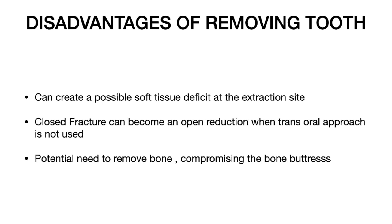The disadvantages of removing a tooth in the line of fracture include: a possible soft tissue deficit at the extraction site, a closed fracture becoming an open one when a transoral approach is not used, and the potential need to remove bone in case of an impacted tooth, which compromises the bone buttresses that could ideally help in close reduction of the fracture.